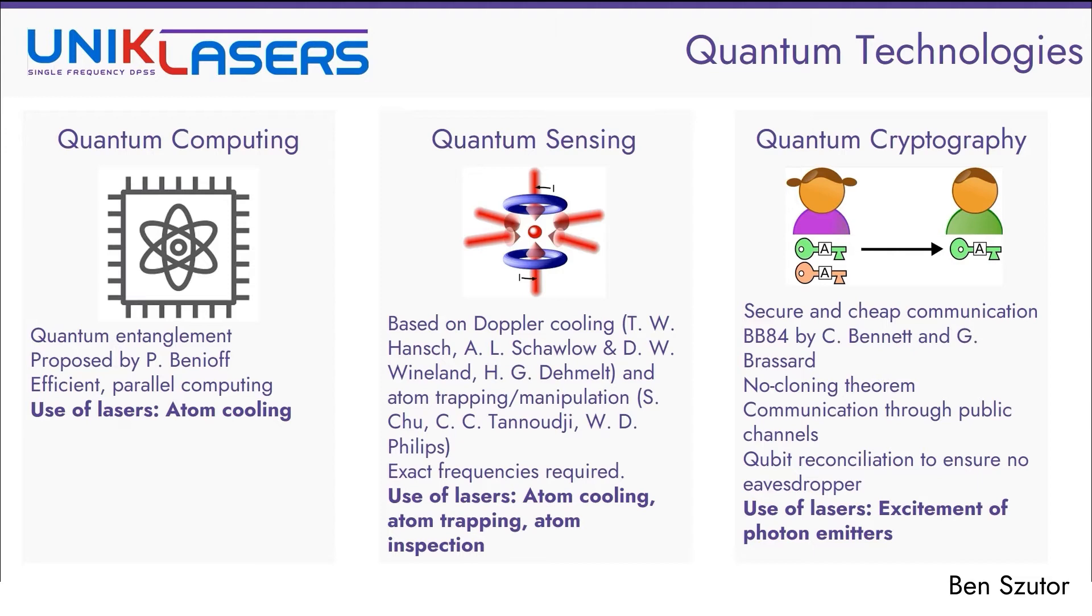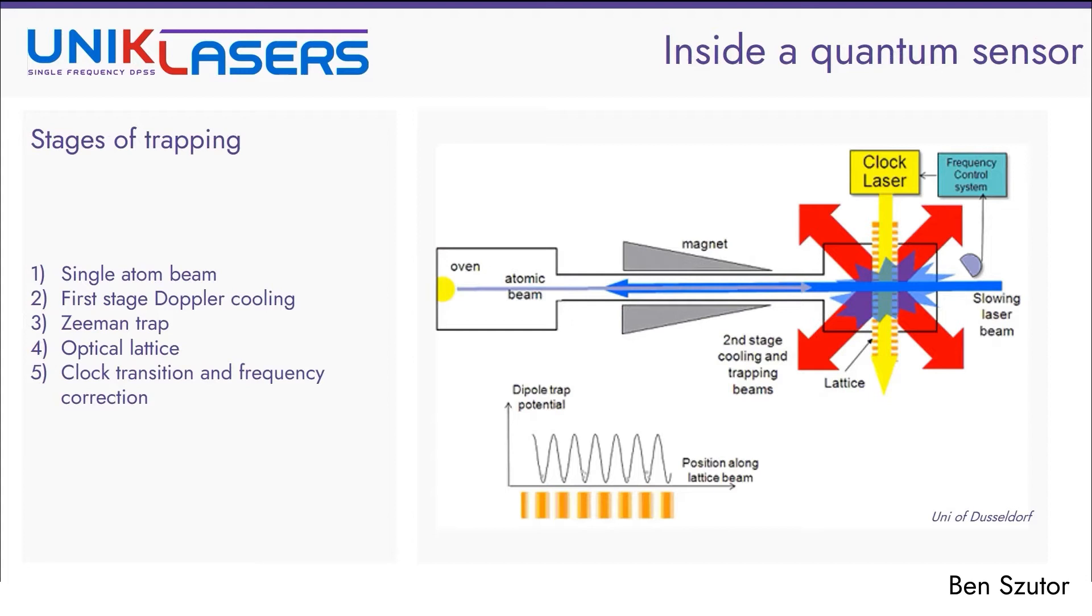In this next slide, I'm showing a very broad, top-level diagram of a neutral atom clock, which are the core of atom sensors or quantum sensors. They have multiple stages, as it can be seen, and there are many different types of lasers used in these systems. If you go from the left hand side, you see that there is an atomic beam generated, which needs to be quite consistent in its flow. It is then cooled down in multiple stages. First, it's Doppler cooled to about a micro-Kelvin temperature, and it's then introduced into a Zeeman shifter, and finally confined in an optical lattice. And in this optical lattice, the atoms are inspected using the clock laser, and this gives us a very good frequency reference.